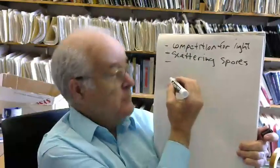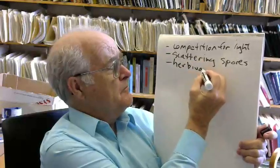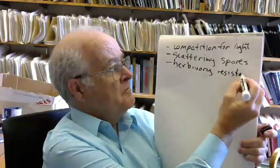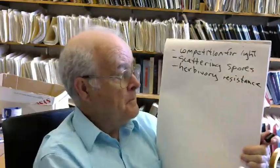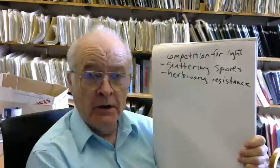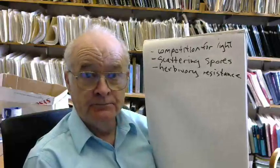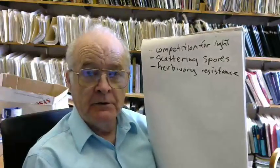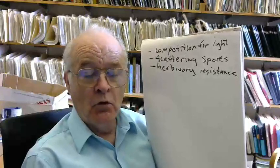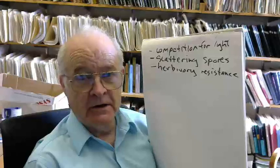There is herbivory resistance. If you get large and woody you're less prone to be eaten by millipedes. Millipedes cannot handle wood at all. Millipedes now live largely on partly decomposed plant debris or material that has a lettuce-like or bean sprout-like consistency.